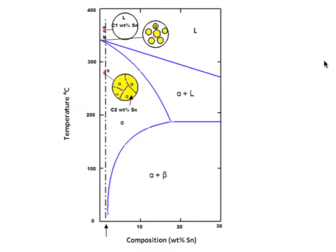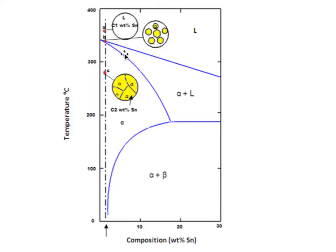As long as we are in this two-phase region — which is a very short interval at this specific composition — we will have both liquid and the alpha phase. As we pass through this interval, the alpha phase is growing. When we come down to the solidus line, all material has gone from liquid to solid, and we have only alpha phase, in which 2% of tin is dissolved. As we continue down to room temperature, nothing more happens — we end up with an alpha phase with 2% tin dissolved.